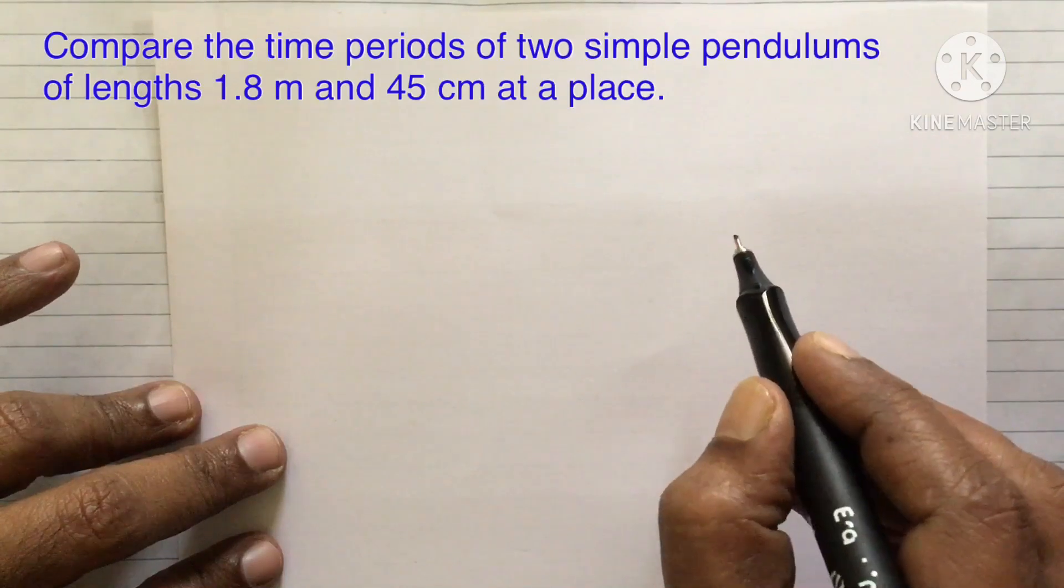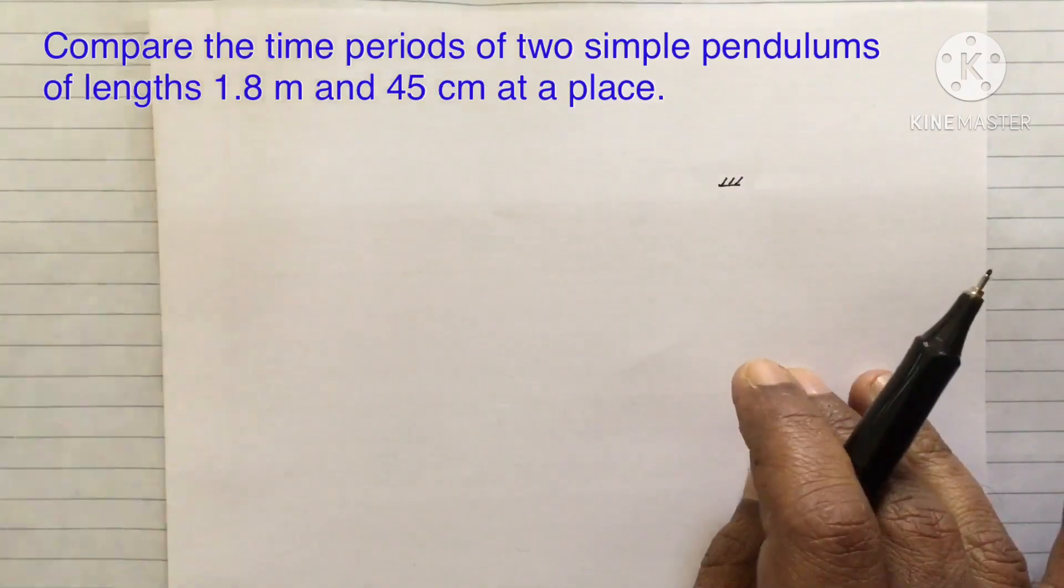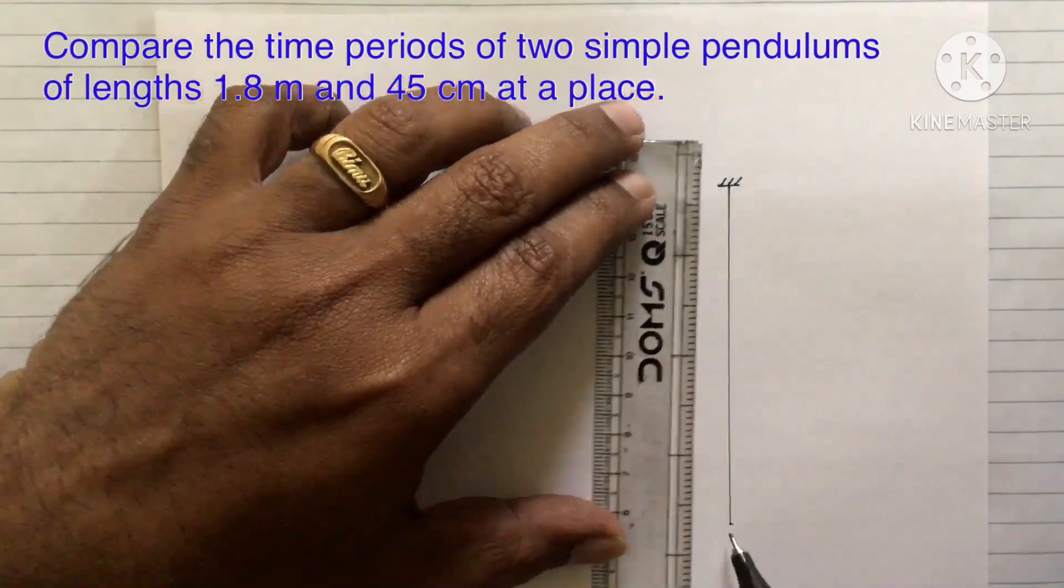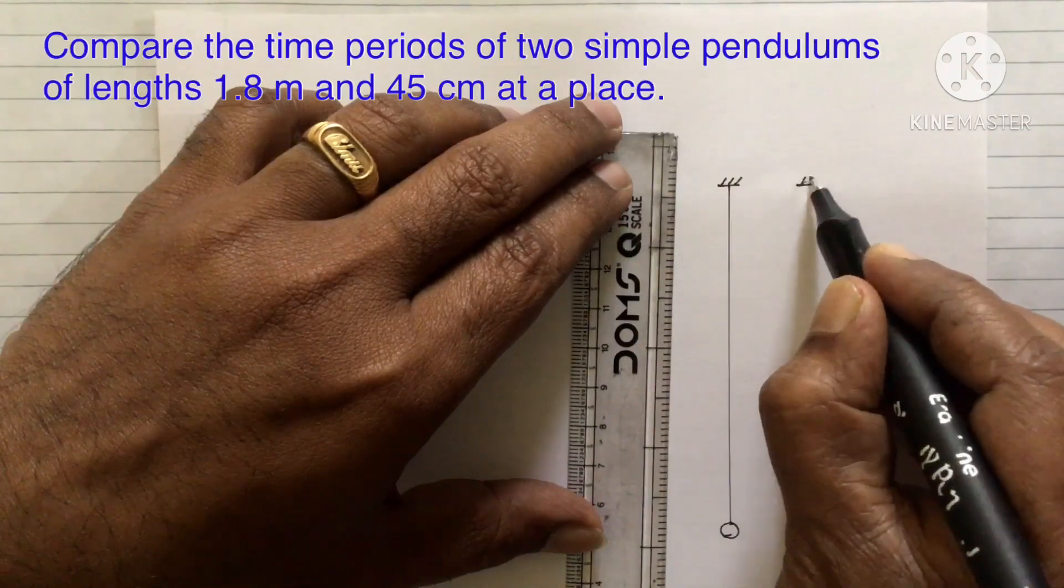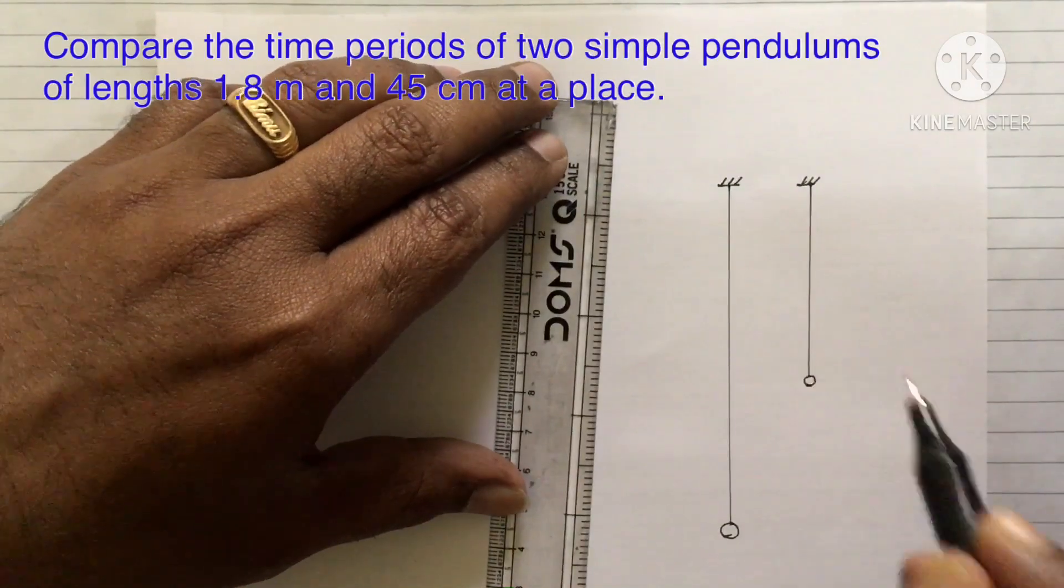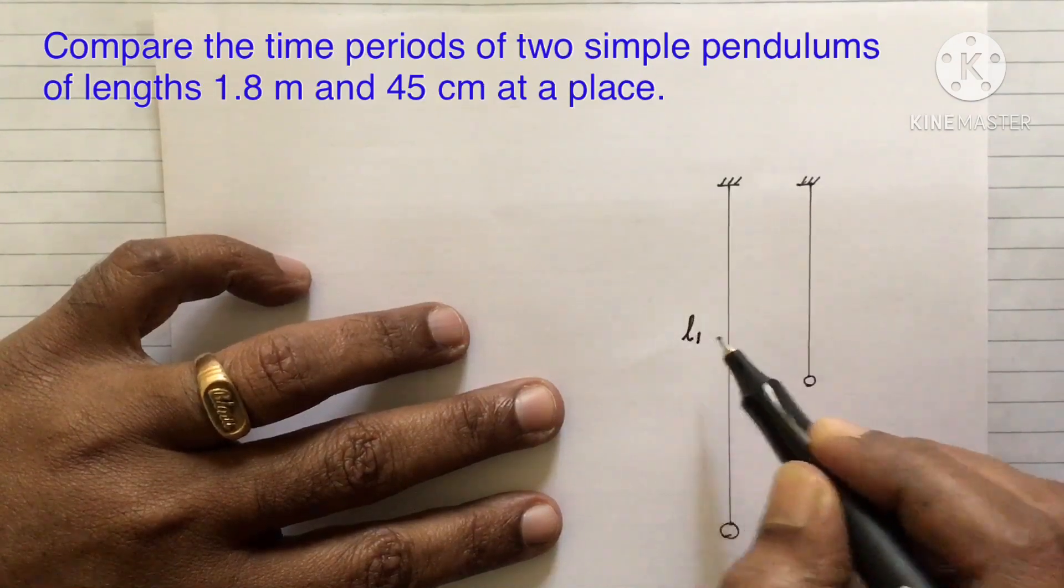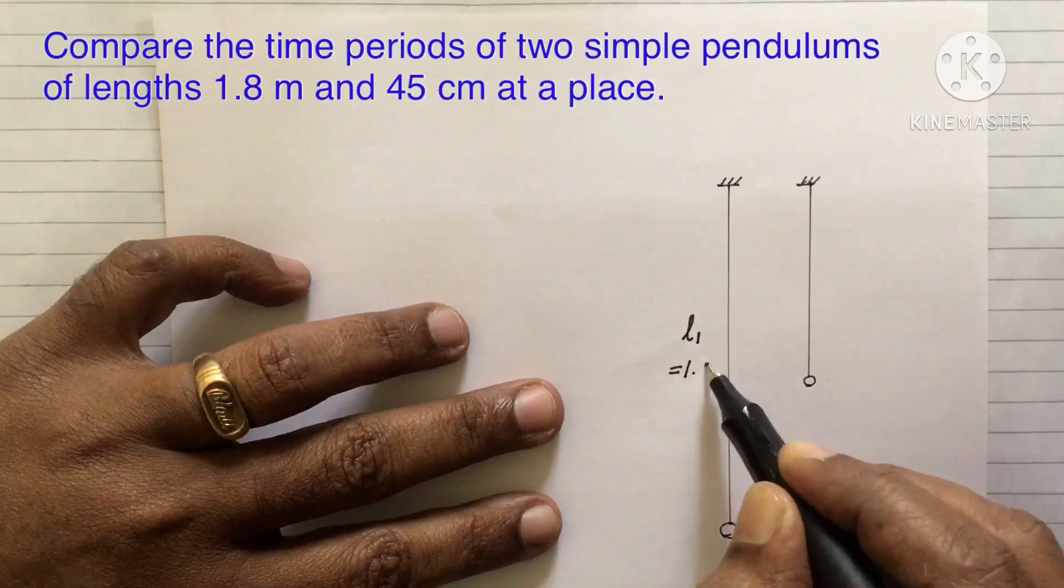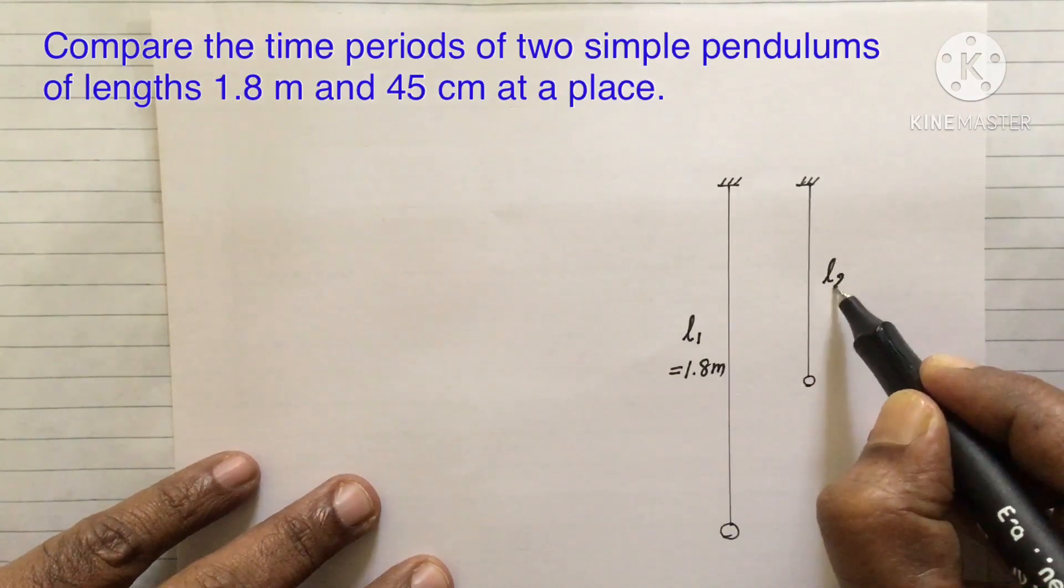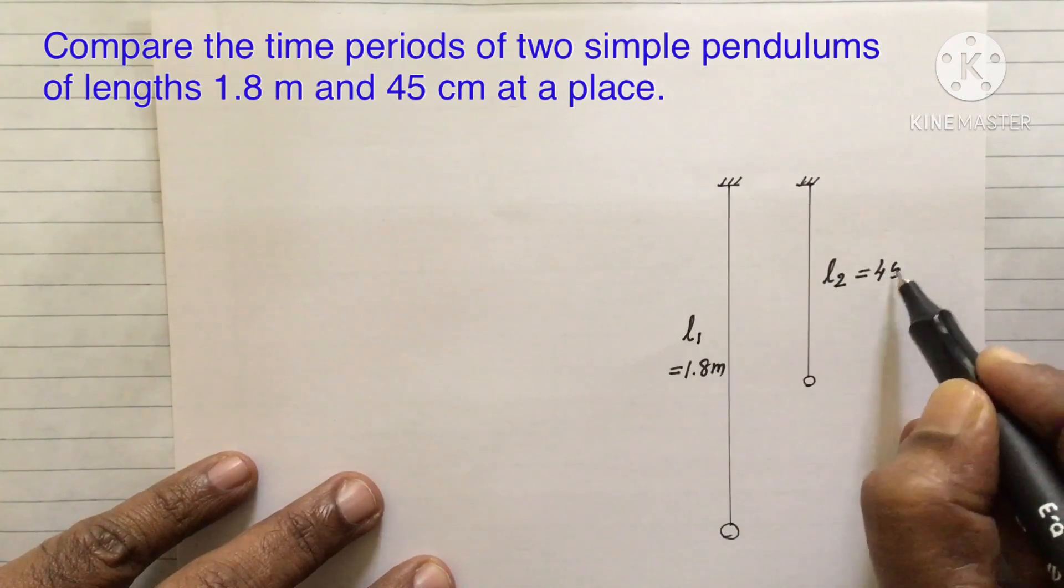Here one pendulum is of length 1.8 meter and another pendulum is of length only 45 centimeter. So, let me take the length of the first pendulum L1 that is equal to 1.8 meter and the second pendulum, length of the pendulum let me represent it by the letter L2 and that is equal to 45 centimeter.